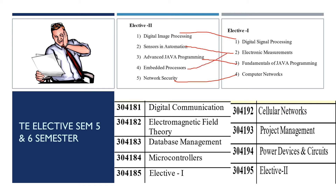If you are very good in microcontroller, then definitely your choice is Embedded Processor. If you want to pursue your career in signal processing, then Digital Signal Processing and Digital Image Processing is your career path. If you want to explore networking fundamentals or security and cryptography, then your choice is Computer Networks for Elective One and Network Security for Elective Two.